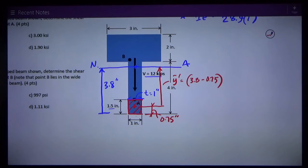So now we know A prime is 1 times 1.5, 1.5 square inches.